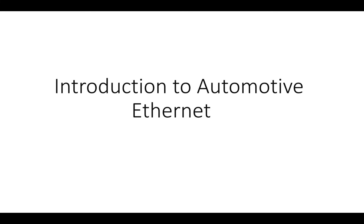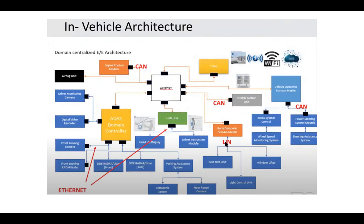Consider an in-vehicle architecture including almost all different kinds of protocols. We have an engine control module which uses CAN protocol, an inertial motion unit which uses CAN, and a power steering module which also uses CAN. Sub-modules like seat belt unit, window lifter, and light control use LIN protocol. The HMI unit and ADAS domain controller use Ethernet.